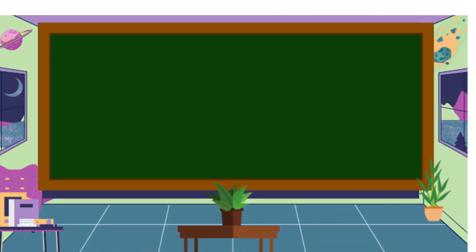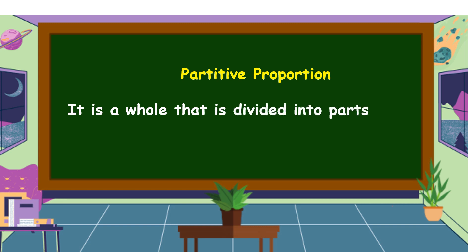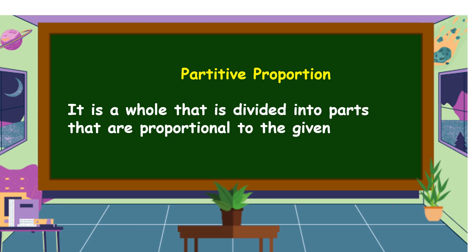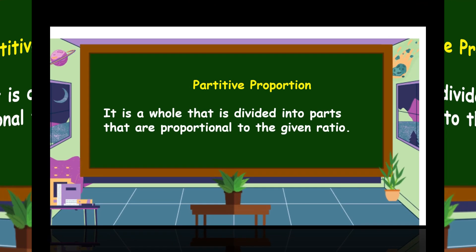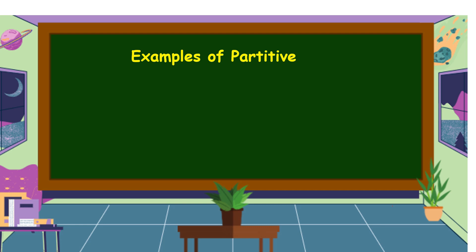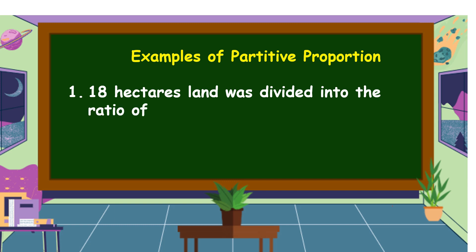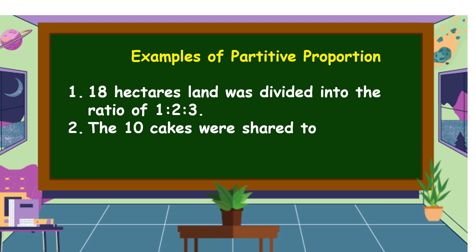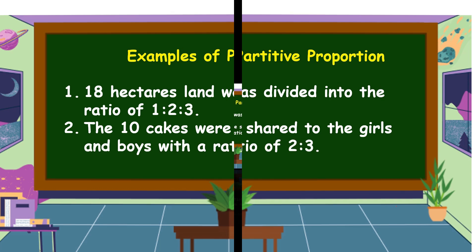The third type of proportion is partitive proportion. When we say partitive proportion, it is a whole that is divided into parts that are proportional to the given ratio. Examples: 18 hectares of land was divided into the ratio of 1:2:3, and 10 cakes were shared between girls and boys with a ratio of 2:3.